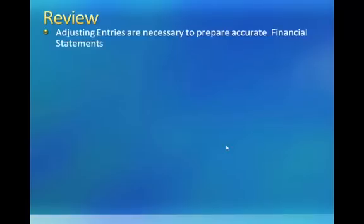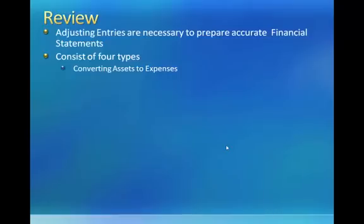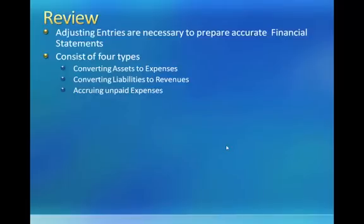Let's review and bring it all together. Adjusting entries are performed at the end of the reporting period to allow firms to prepare an adjusted trial balance. There are four types of adjusting entries. The first entry converts assets to expenses and is designed to make sure net income is not overstated. The second entry converts liabilities to revenue accounts and is designed to make sure net income is not understated. The third entry accrues unpaid expenses, which acts to make sure that net income is not overstated. And the fourth and final entry accrues uncollected revenue, which helps ensure that net income is not understated.